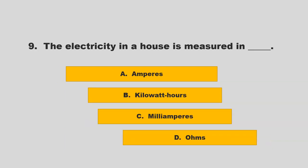The electricity in a house is measured in blank. Is it amperes, kilowatt hours, milliamperes, or ohms? If you chose B, kilowatt hours, you are correct.